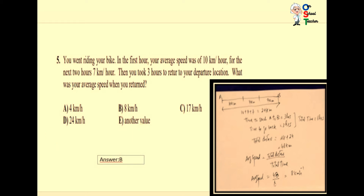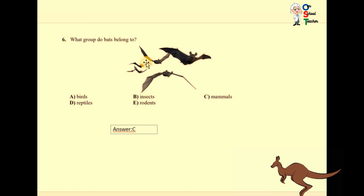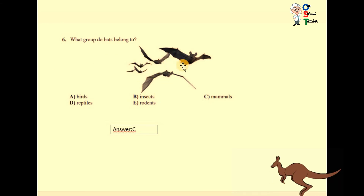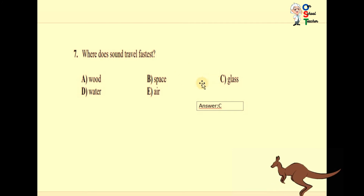Question number six: what group do bats belong to — birds, insects, mammals, reptiles, or rodents? Obviously mammals. Rodents are also mammals but of a different type; bats are flying mammals. Question number seven: where does sound travel fastest? In space, glass, water, or air? The answer is glass.